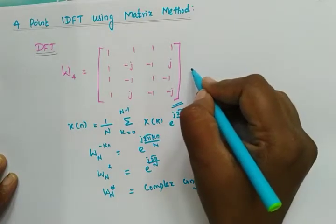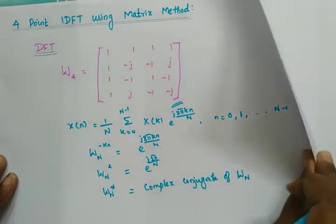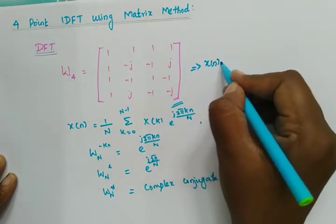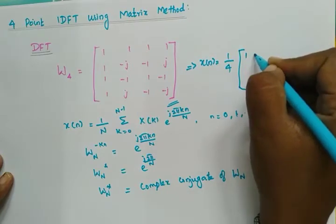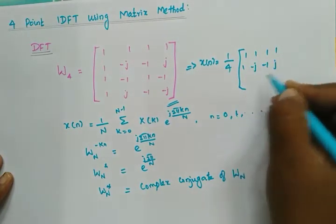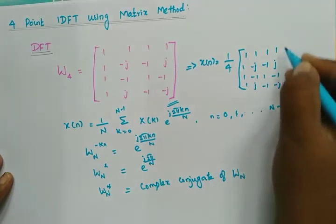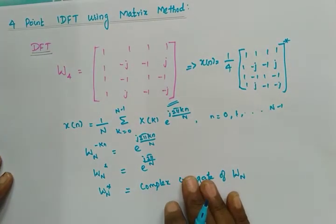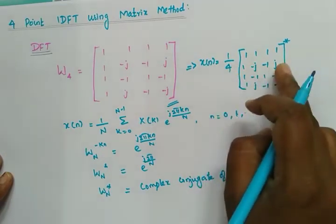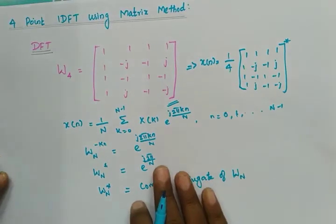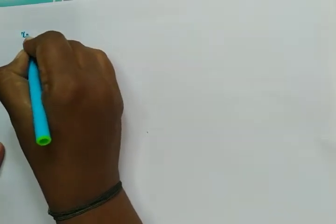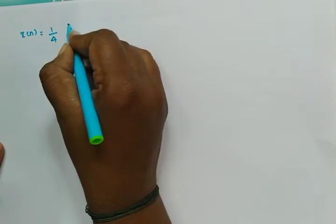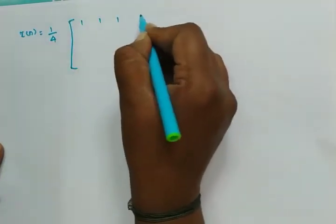Now what we are going to do is take the conjugate. For IDFT, x(n) is equal to 1/4 — because we have 1/4 in the equation — times the matrix [1 1 1 1; 1 −j −1 j; 1 −1 1 −1; 1 j −1 −j] star. The star means we take the conjugate: imaginary terms that are negative become positive, and positive become negative.